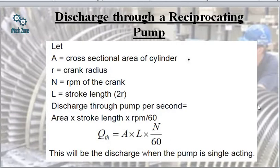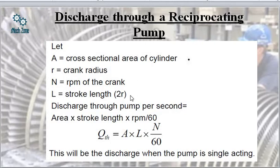The most important part of this topic is calculating the discharge. The formula is Q = L·A·N / 60. It is easy to remember using the mnemonic 'LAN' — like Local Area Network — divided by 60. Here N is the speed in RPM, L is the stroke length equal to 2R, and A is the cross-sectional area of the cylinder. This formula is very important and direct questions are generally asked from this section.